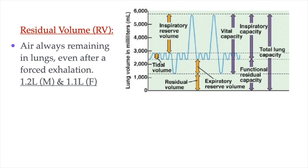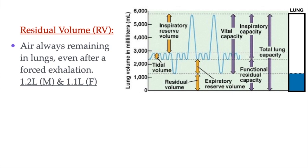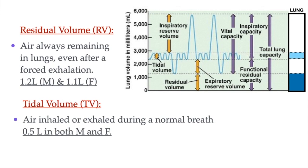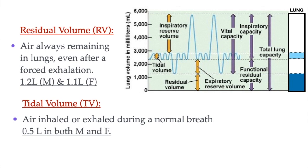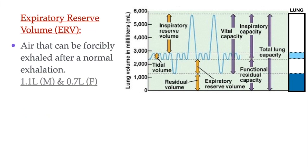The graph here provides a visual representation of our lung volumes. The residual volume represents the amount of air always present in the lungs. Our tidal volume is the amount of air we inhale and exhale during a normal breath — on average about 500 milliliters or 0.5 liters in both males and females. The expiratory reserve volume is the air we can forcibly exhale after a normal exhalation, about 1.1 liters in males and 0.7 liters in females on average.